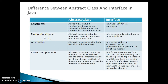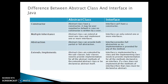An interface cannot have a constructor. When we talk about multiple inheritance, an abstract class can extend at most one class and implement one or more interfaces. In the case of an interface, it can only extend one or more interfaces. When we talk about the abstraction feature, an abstract class can provide partial or full abstraction — you can have all methods abstract or a mix. But an interface provides full abstraction as no implementation is provided for any method, except for Java 8 default and static methods.